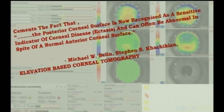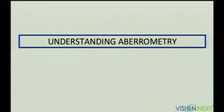This cements the fact noted by Dr. Belin: the posterior corneal surface is now recognized as a sensitive indicator of corneal disease and can be abnormal even when the anterior surface and pachymetry are normal.